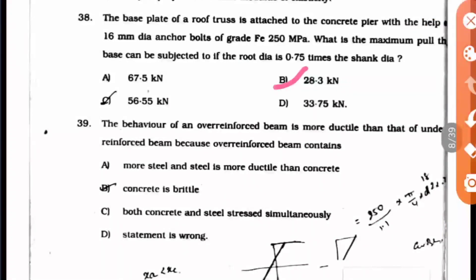Question 39: The behavior of an over-reinforced beam is more ductile than that of an under-reinforced beam because over-reinforced beam contains... The statement itself is wrong because under-reinforced beams are actually ductile. In under-reinforced structures, the steel is lower, so when failure occurs, the steel fails first before the concrete.